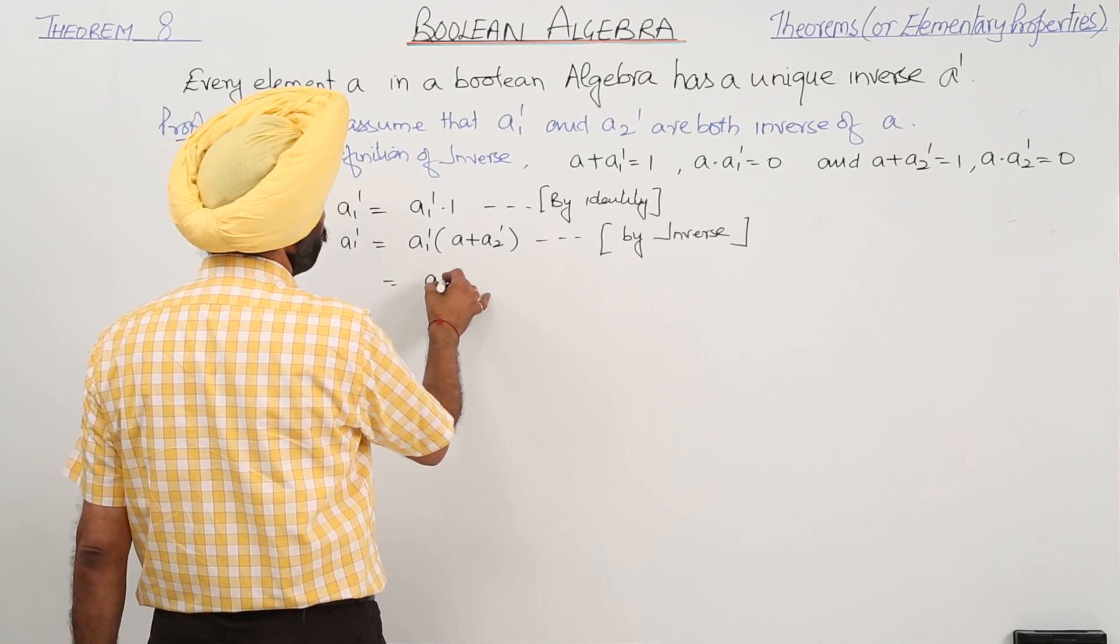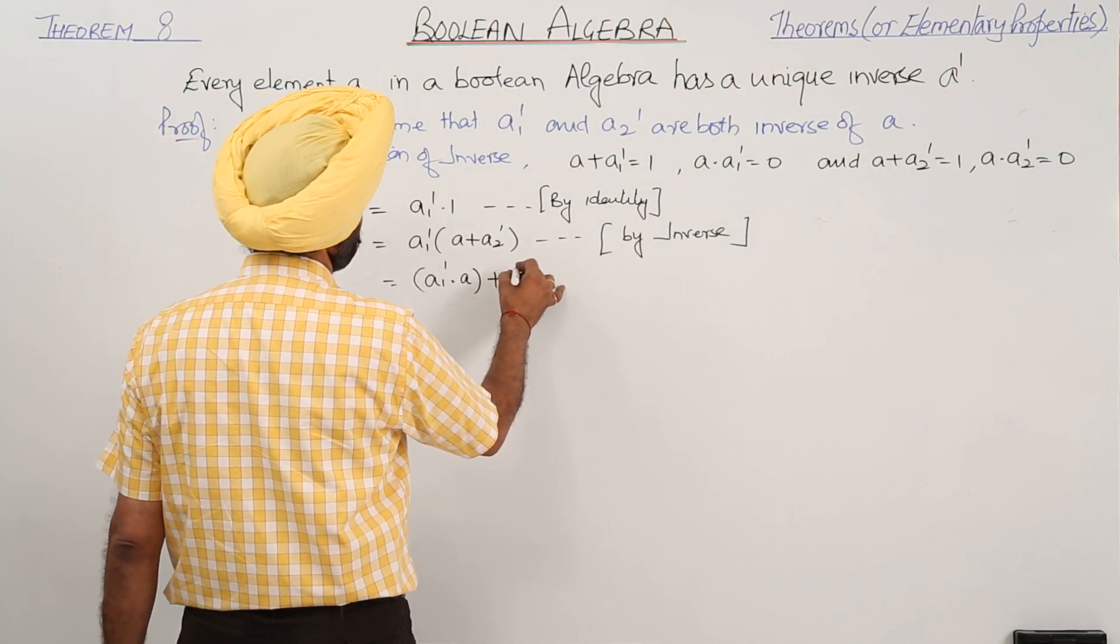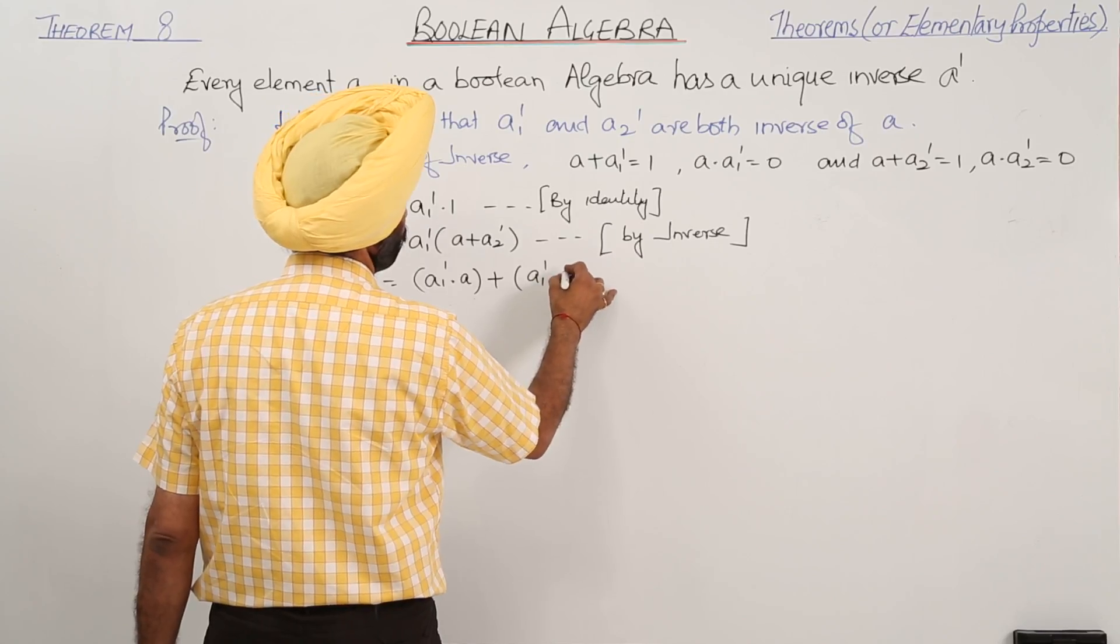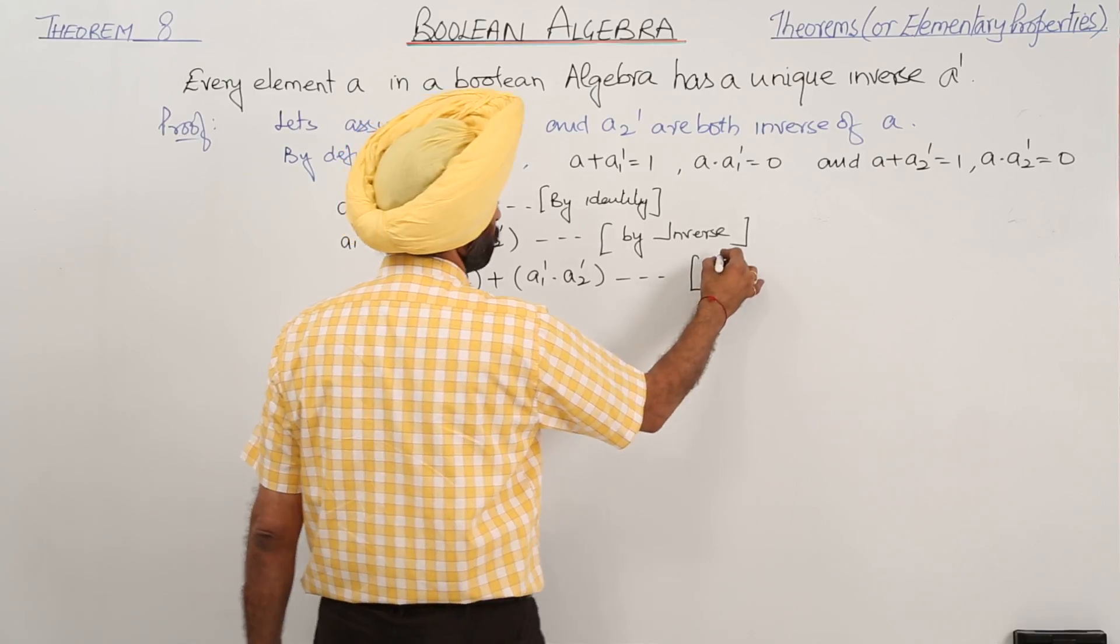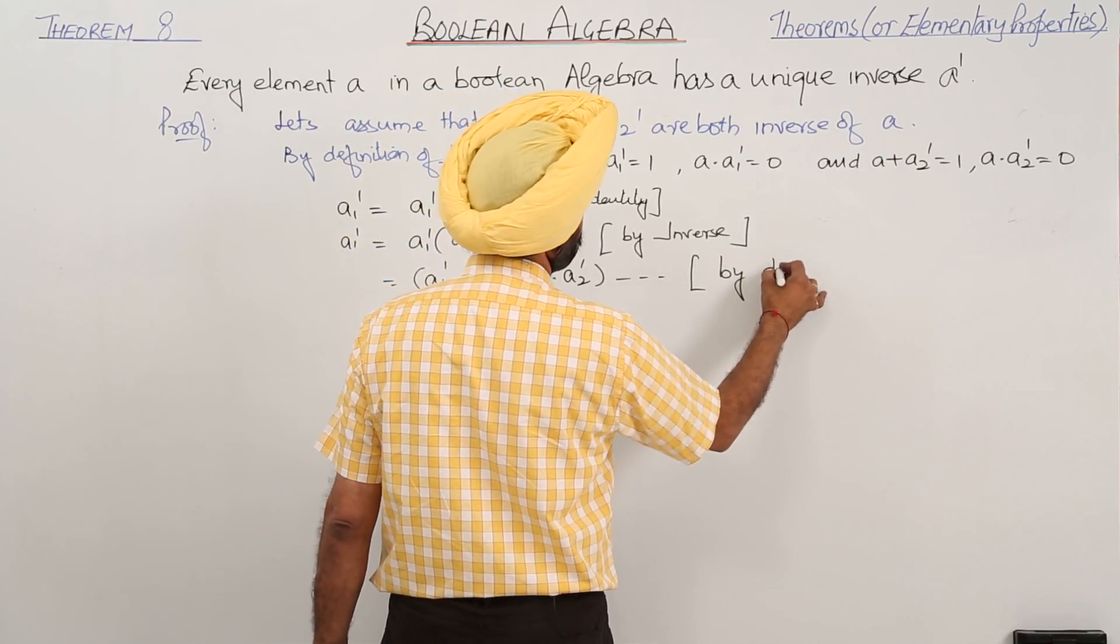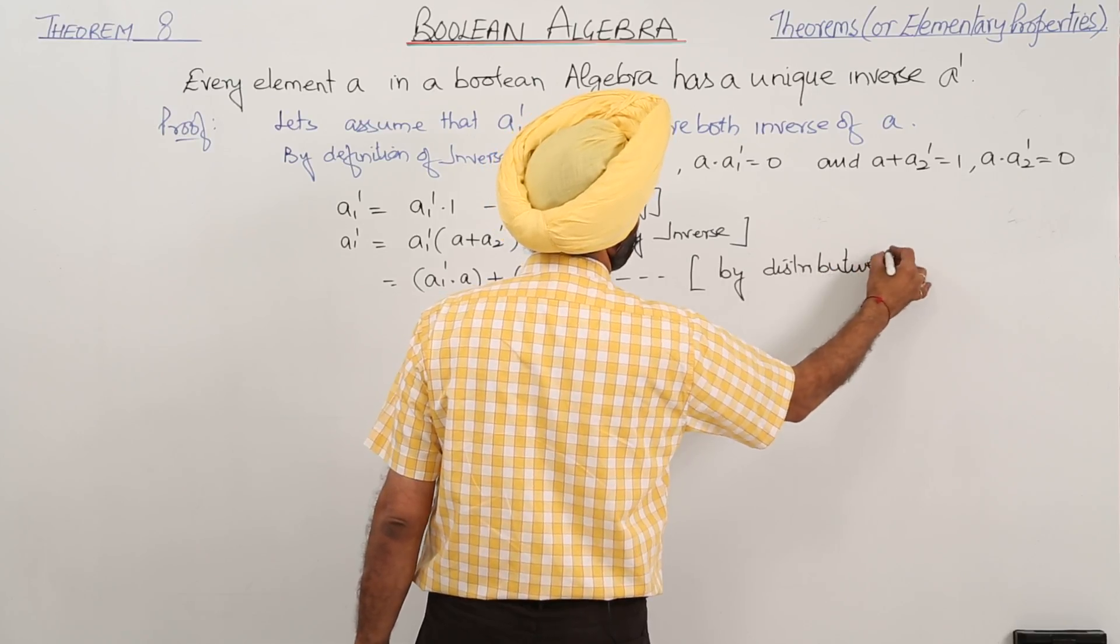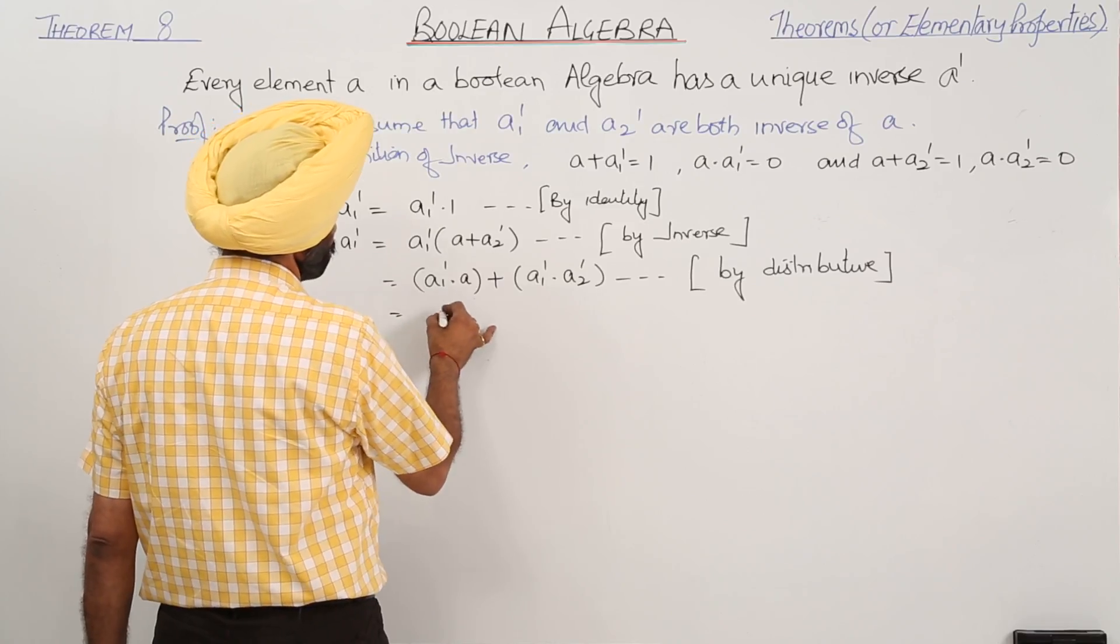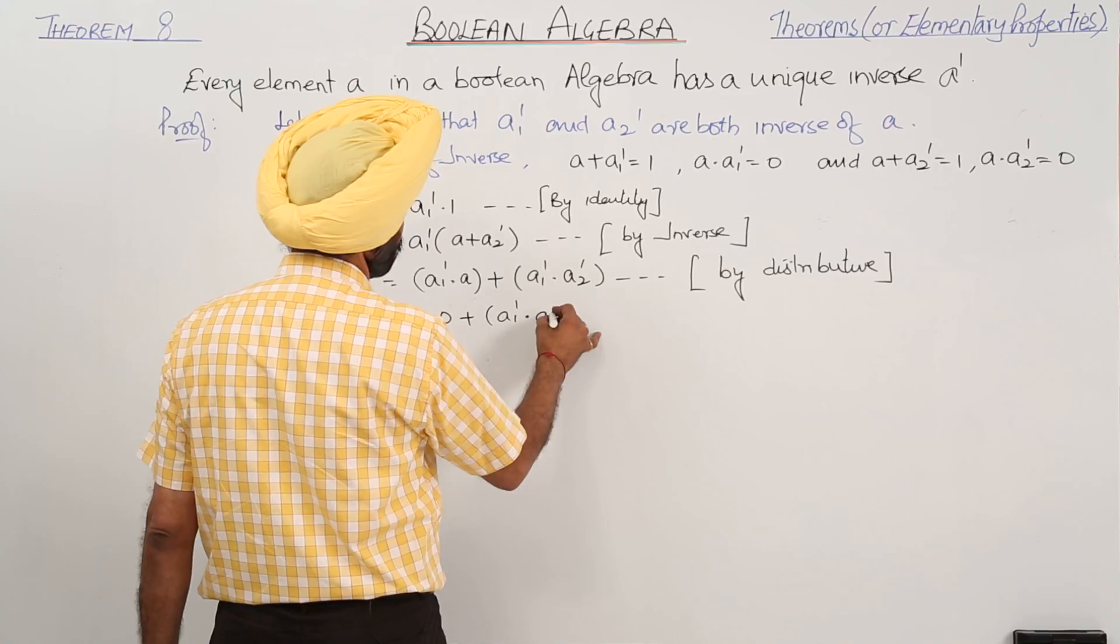A1 inverse dot A plus A1 inverse dot A2 inverse. Now this becomes 0 plus A1 inverse dot A2 inverse.